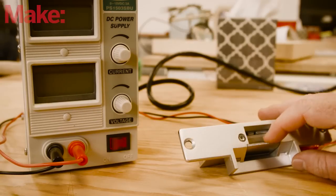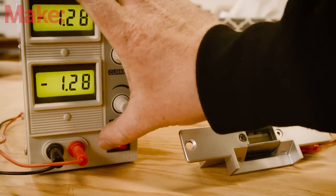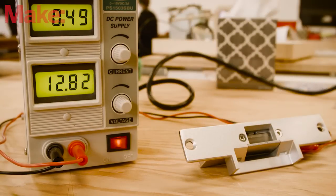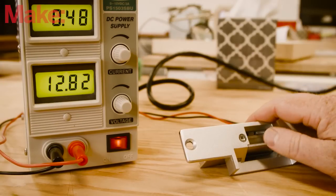The door strike we're using is a fail-closed model, so it will remain locked even when the power goes out. But when power is supplied to the strike, the latch will be released.